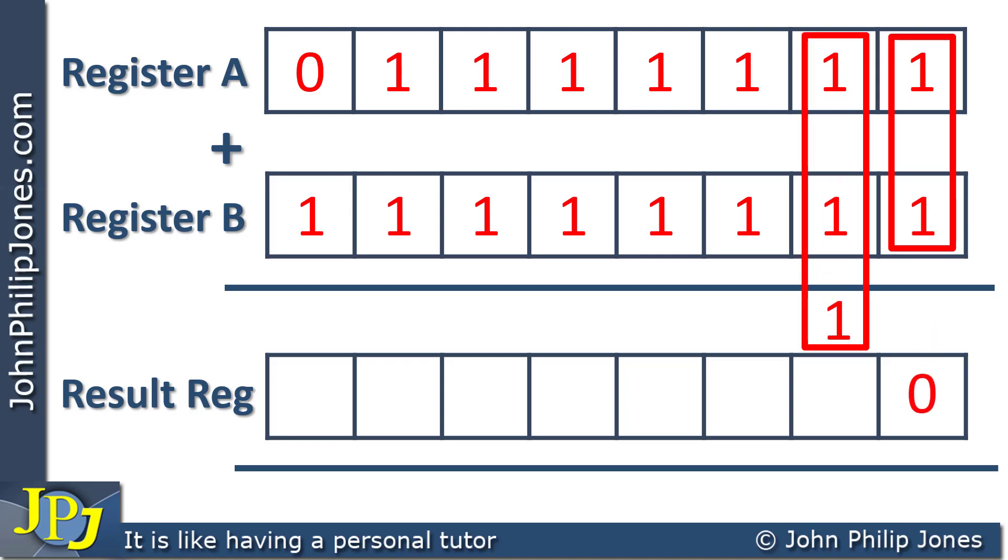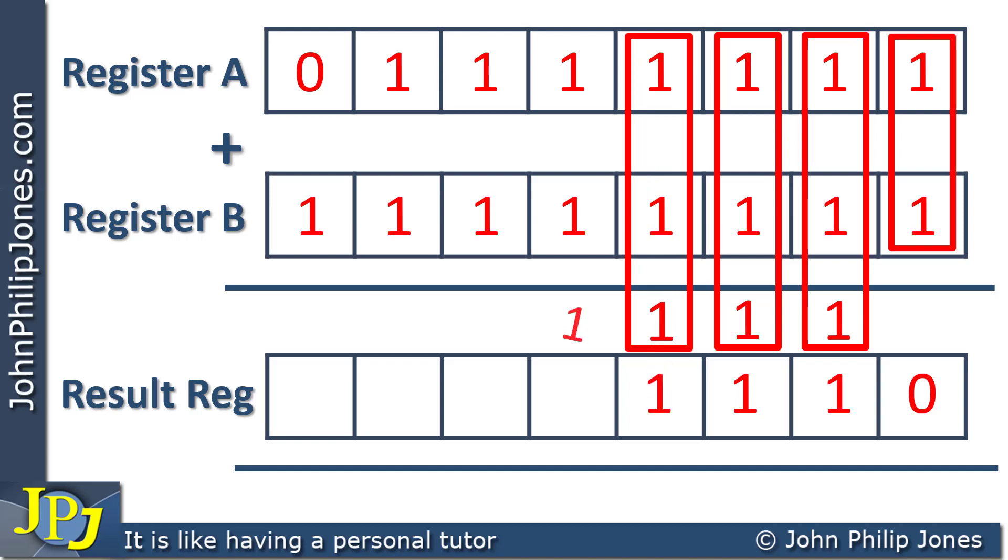We then add up these three numbers, which takes into account the carry. 1 plus 1 plus 1 is 3, which is 1 down and carry 1. We then perform the addition of this column, which is 1 plus 1 plus 1, which is 3, which is 1 down and carry 1. We then perform this addition here, which is also 3, which is 1 down and carry 1. We then perform this addition, which is 1 plus 1 plus 1, which is 3, which is 1 down and carry 1.